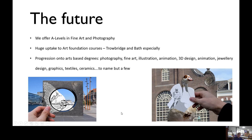After a GCSE, what can you move on to? Here at Ralph Allen we offer A-levels in fine art and photography. There's a huge uptake to art foundation courses — if it's something you want to continue with, Trowbridge and Bath are very popular from this school. Progression onto arts-based degrees includes photography, fine art, illustration, animation, 3D design, jewellery, design, graphics, textile, ceramics — to name but a few.